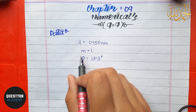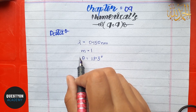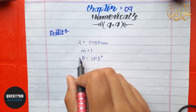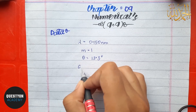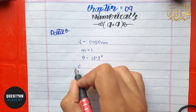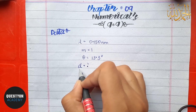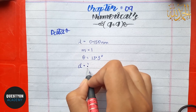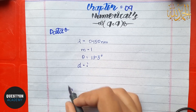They have asked us to find what is the interplanar spacing of the reflecting planes in the crystal. So we have to find the interplanar spacing, which we will represent as d.